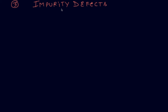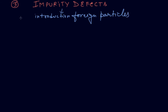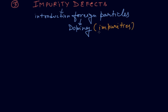Hello everyone. The impurity defect arises due to the introduction of foreign particles in a solid. We are introducing foreign particles into solids, due to which the density will change. This is called doping. The foreign particles are generally known as impurities. Whenever there is addition of impurities in a crystal, that is termed as doping. Impurity defect is of two types.